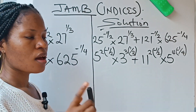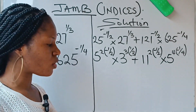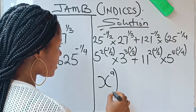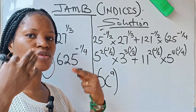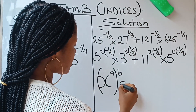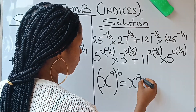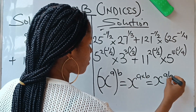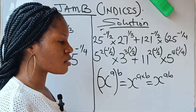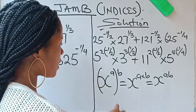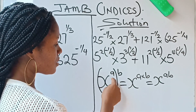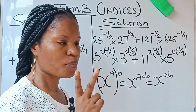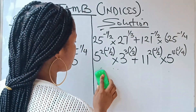Let's go ahead and solve. Notice that in indices there is a law that states that x raised to the power of a, when that is raised to another power b, equals x raised to the power of a times b. So when you have a number raised to a power and that number is also raised to another power, just multiply the powers together.